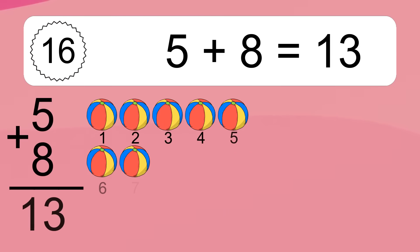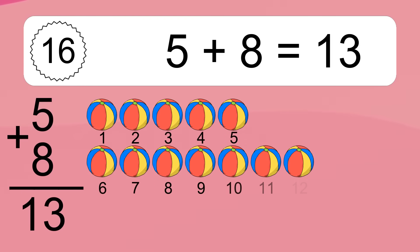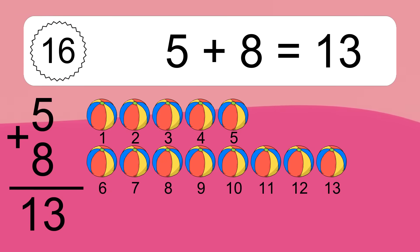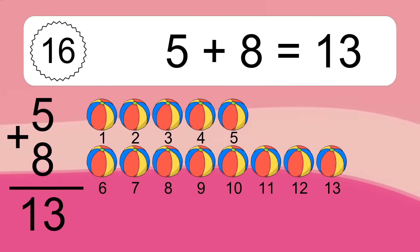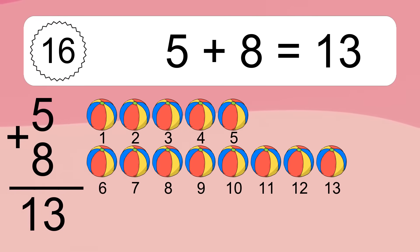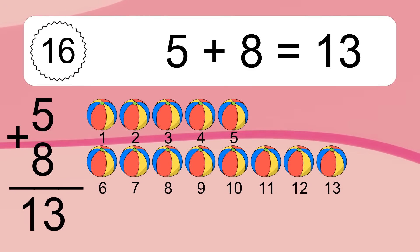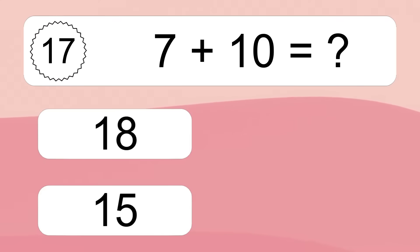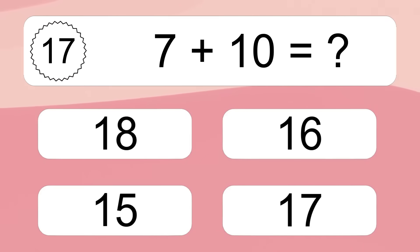5 plus 8 equals what? 5 plus 8 equals 13. Let's count it: 1, 2, 3, 4, 5, 6, 7, 8, 9, 10, 11, 12, 13.